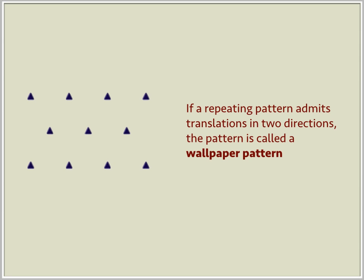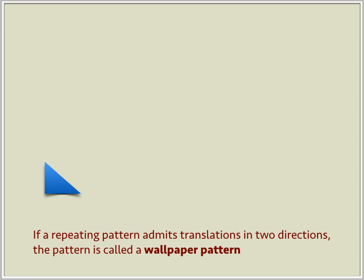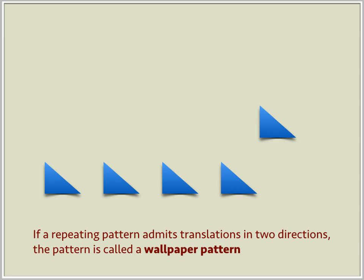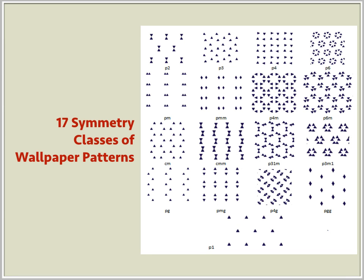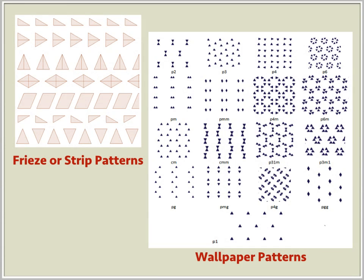If a repeating pattern admits translations in two directions, the pattern is called a wallpaper pattern. There is a total of 17 symmetry classes of wallpaper patterns known. This classification distinguishes geometrically one planar pattern from another.